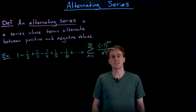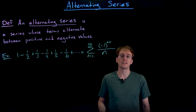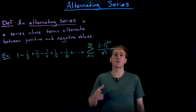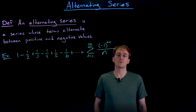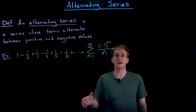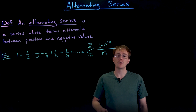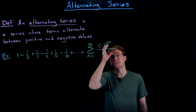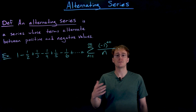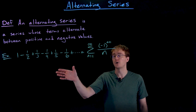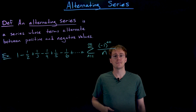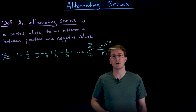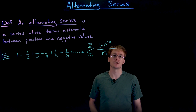This alternating harmonic series is the first example we're looking at, and it's also one of the most important examples of a series — we'll talk more about why later. One important fact: the alternating harmonic series converges. When we talked about the normal harmonic series without alternation, that was an example of a series that diverged. However, the alternating harmonic series is going to be convergent.